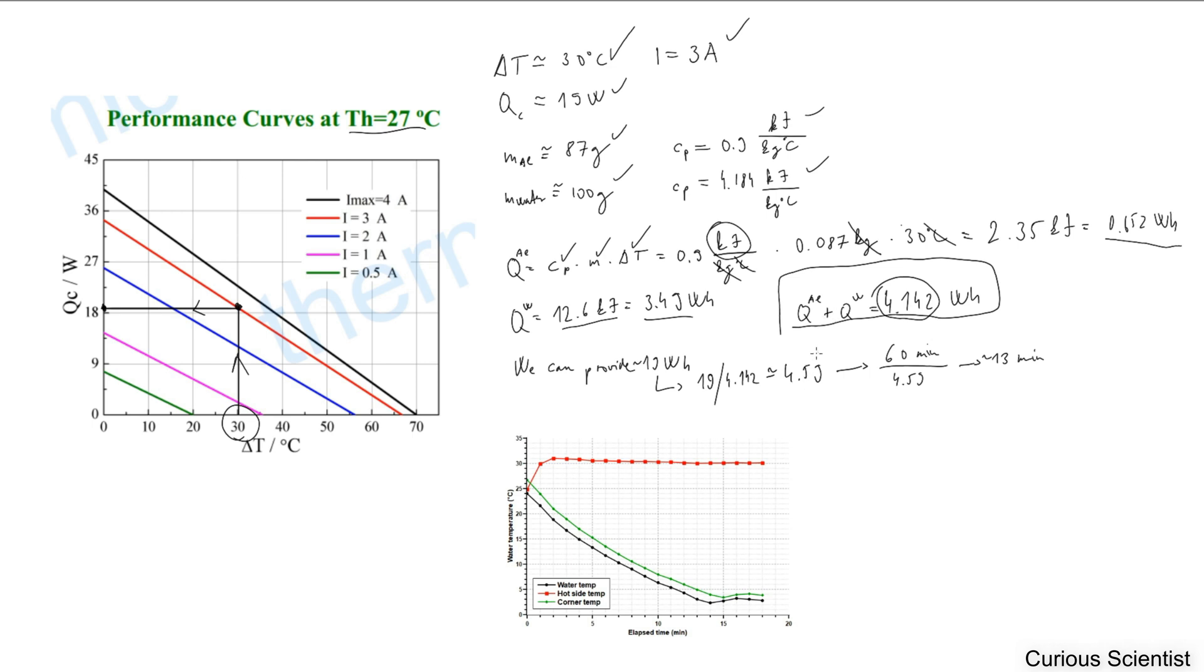You have to divide one hour or 60 minutes with this number, and you can get the time required to reach 30 degrees delta T. I did that division, so 60 minutes divided by 4.59, and that is roughly 13 minutes.